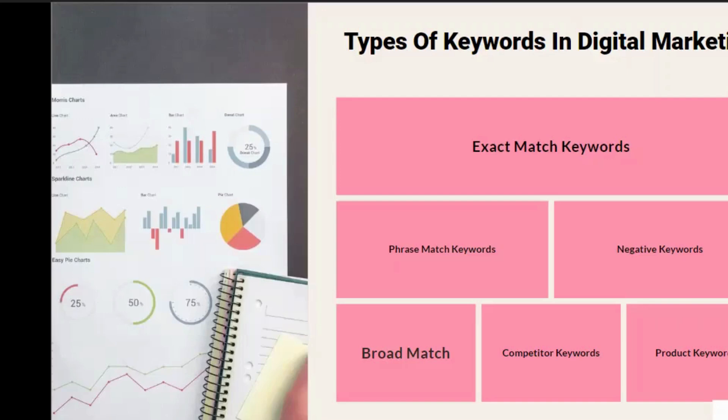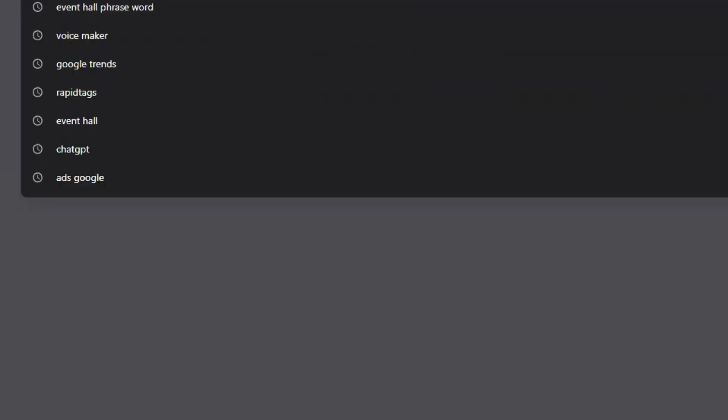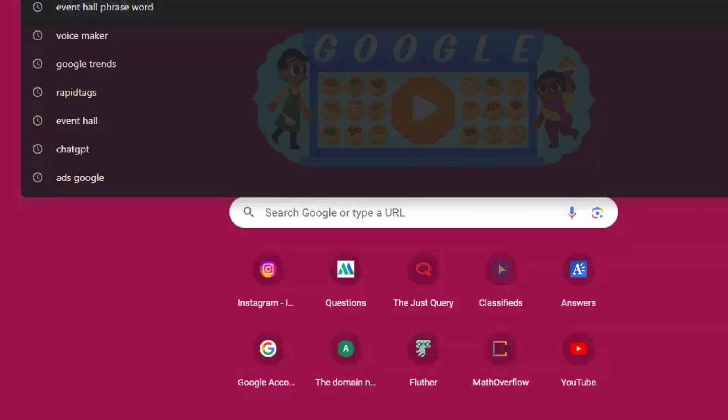For example, it is not related with your event hall. For example, what can I say, this party place.